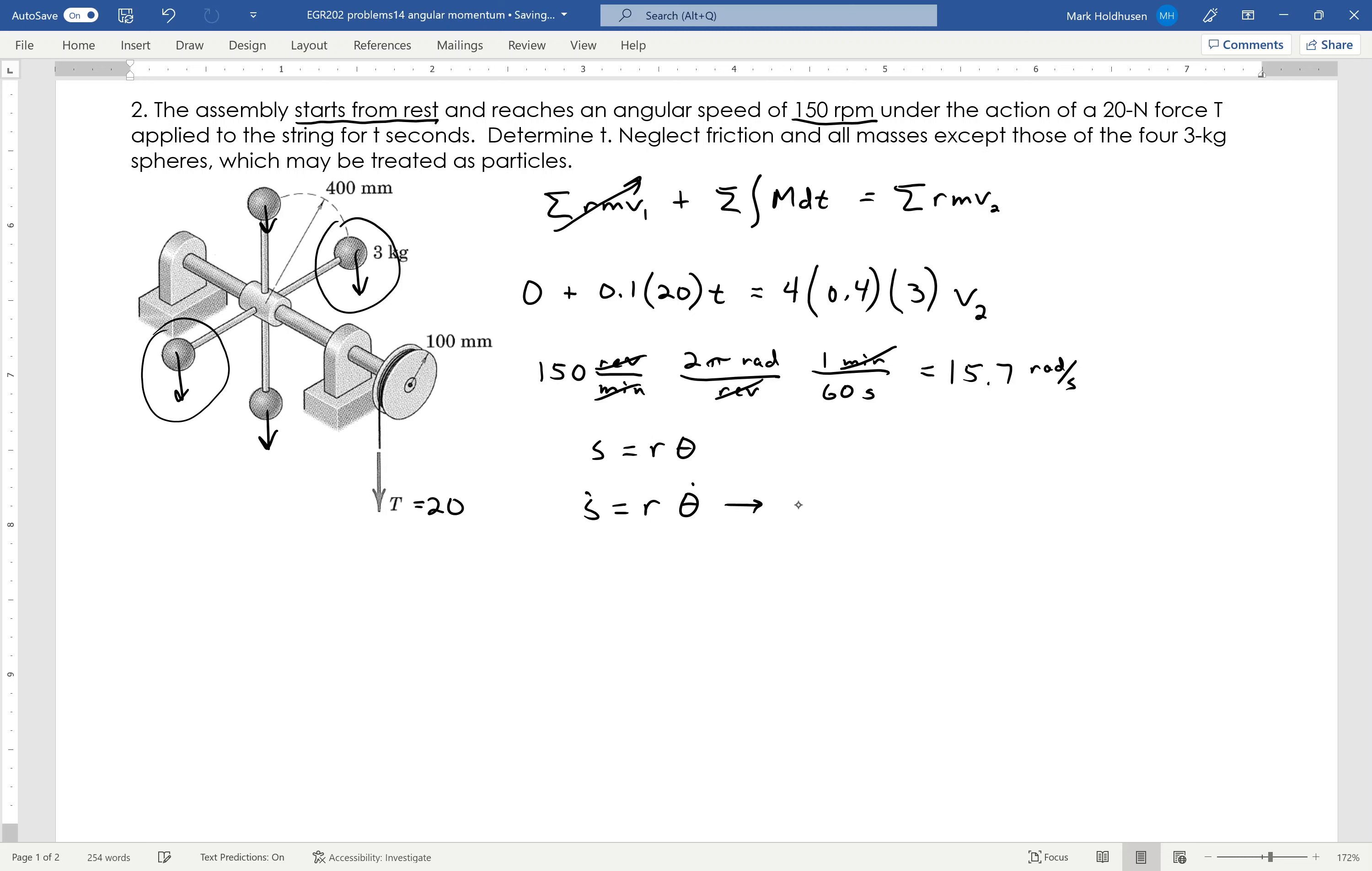from this, I find that my final velocity is going to be equal to 0.4, which is R, times the 15.7 radians per second. So this thing has a velocity of 6.28 meters per second. That's what the velocity of each ball is. And that's how I relate the RPMs to linear velocity.